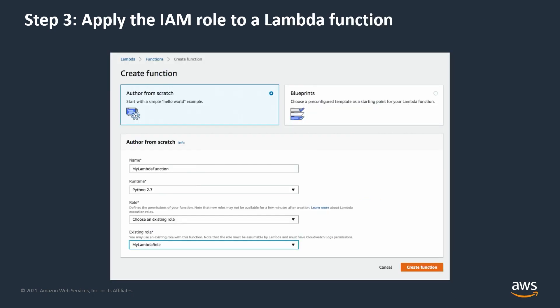To apply the IAM role to a Lambda function, navigate to the Lambda console and choose Create Function. On the Create Function page, from the Role drop-down, choose an existing role. And from the Existing Role drop-down, choose the role you created. Then choose Create Function. Your Lambda function now has access to CloudWatch logs and DynamoDB.